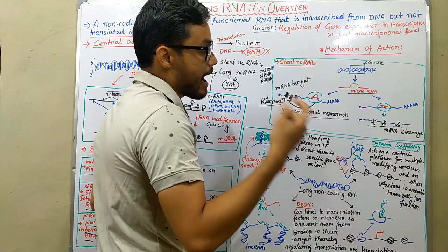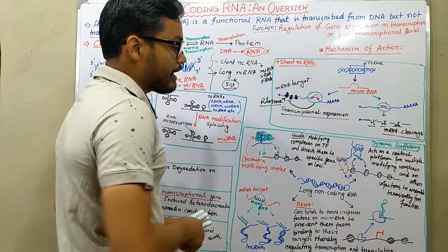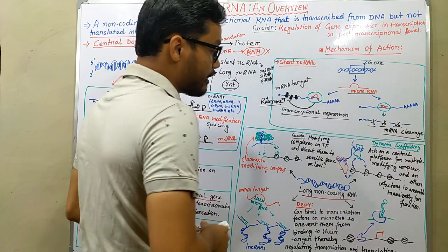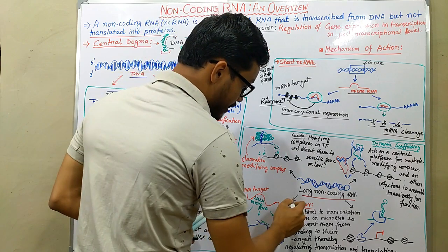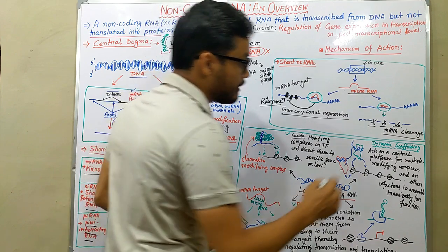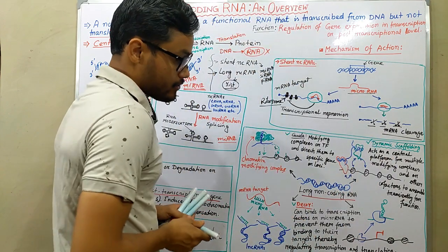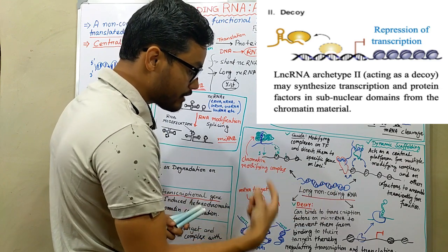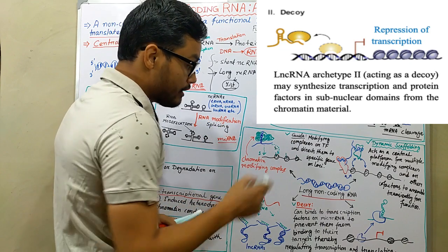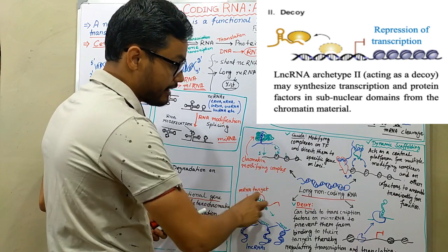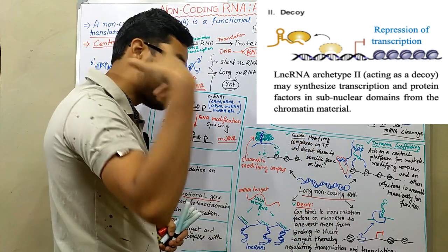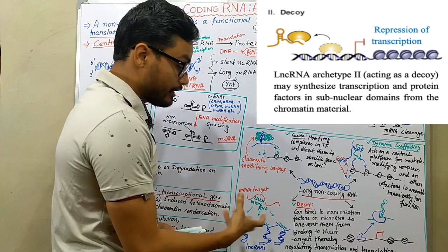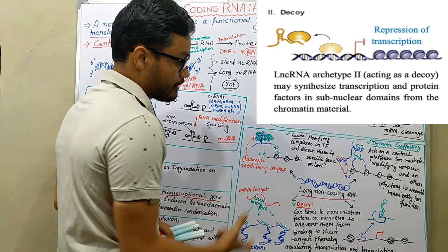Those degraded mRNAs are no longer functional. Now, long non-coding RNAs perform in three different ways. First, they perform as a decoy. Second, as a guide. Third, as a dynamic scaffold. A decoy binds to transcription factors and microRNA to prevent them from binding to their targets, thereby regulating transcription and translation. In this way, the long non-coding RNA forms a complex that blocks transcription and translation of that particular gene.